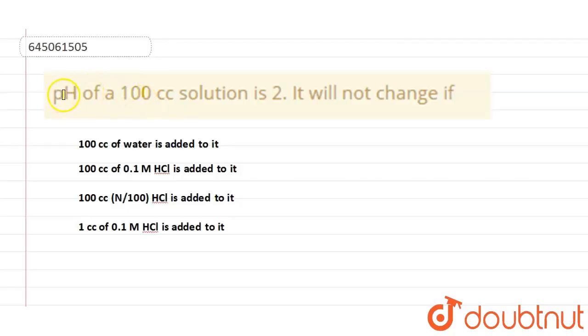Hello students, the question is pH of a 100 cc solution is 2. It will not change if 100 cc of water is added to it, 100 cc of 0.1 molar HCl is added to it, 100 cc of N by 100 HCl is added to it, or 1 cc of 0.1 molarity HCl is added to it.